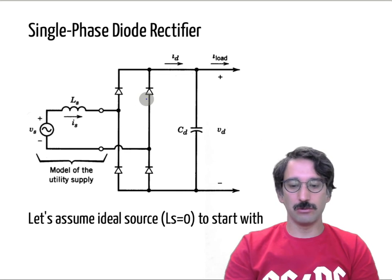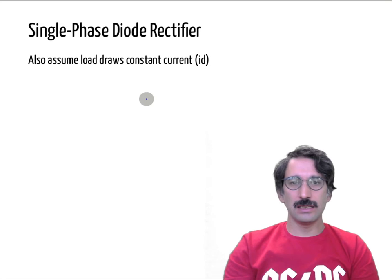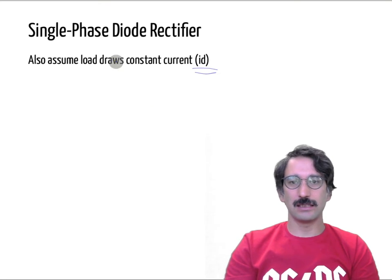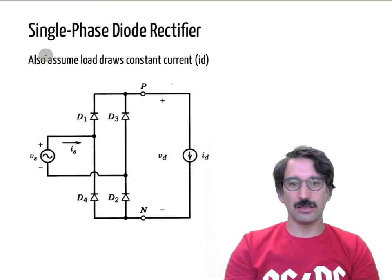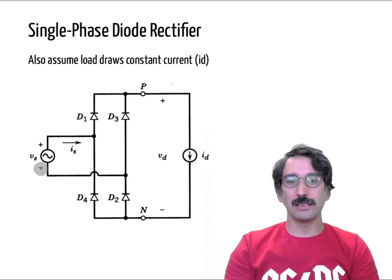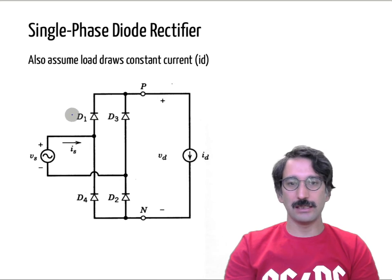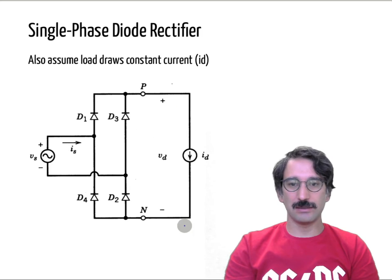Let's assume our output voltage draws a constant current — in other words, the output behaves like an ideal current source. So our circuit becomes: on the primary side we have the AC supply, then we have four diodes connected in a bridge form, and the output models both the capacitor and everything just to simplify our calculations.